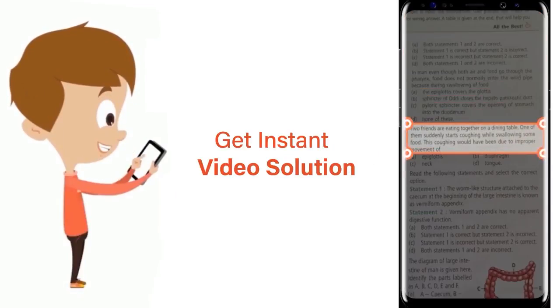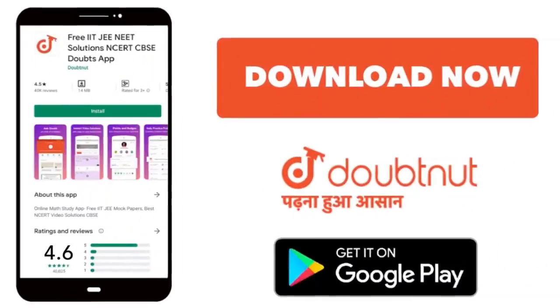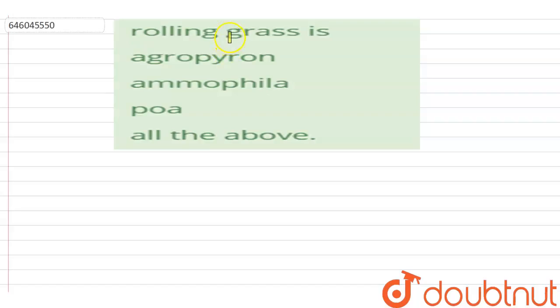Download Doubtnet app today. Hello students, your question is rolling grasses, and the options are agropyron, ammophila, poa, all the above. So the correct option here is all the above.